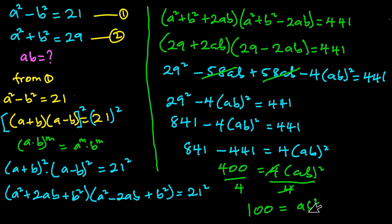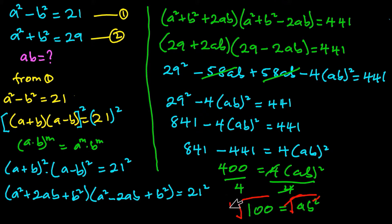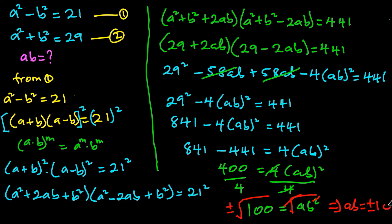Since we want to find ab, I'll take the square root on each side of the equation so that the square and square root cancel. Don't forget that we have plus or minus here, so we are left with ab is equal to plus or minus the square root of 100, which is plus or minus 10. So ab equals plus or minus 10. I hope you enjoyed watching this video.